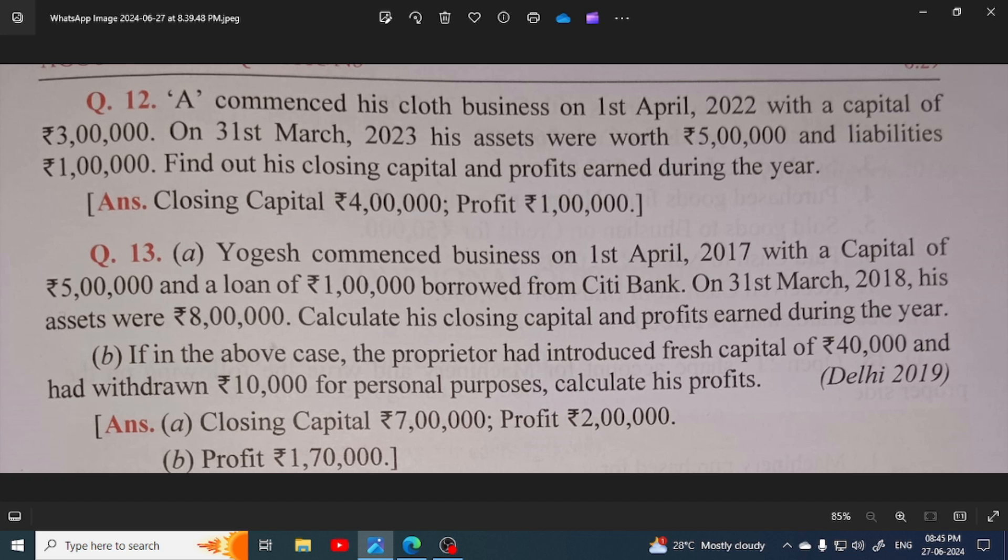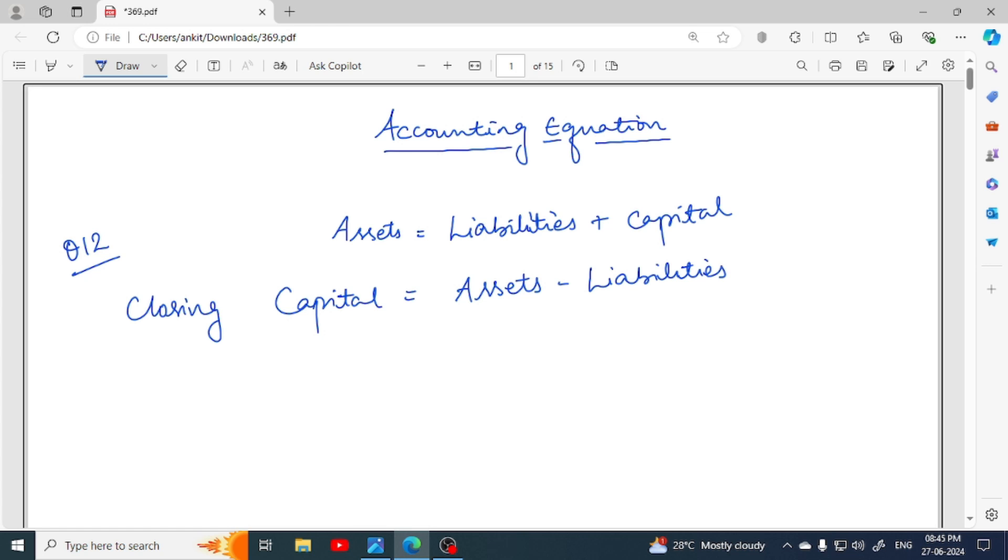You have given value of assets 5,00,000 rupees and liabilities 1,00,000 rupees. So what are we doing? 5,00,000 minus 1,00,000 equals 4,00,000 rupees. So what is the capital? This is 4,00,000 rupees. What is your closing capital? This is your closing capital.